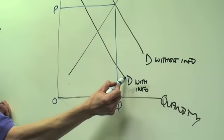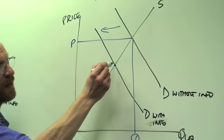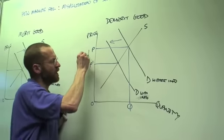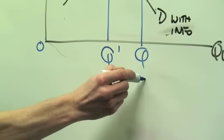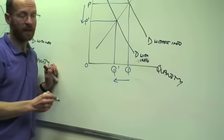The demand curve with information, where it cuts the supply curve, will now give us a new equilibrium. The effect would be that there would be a lower quantity demanded.